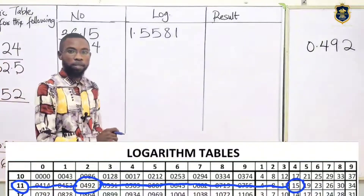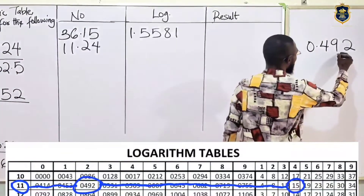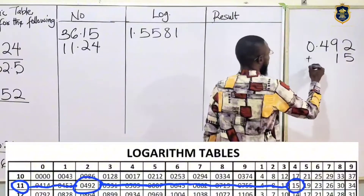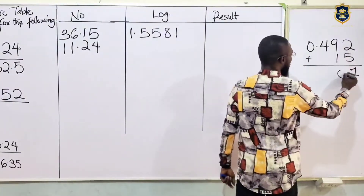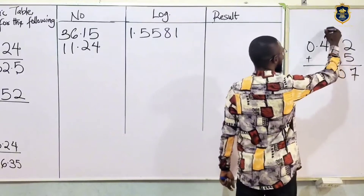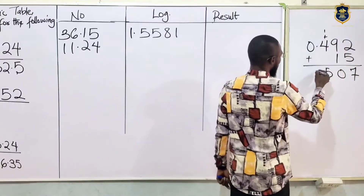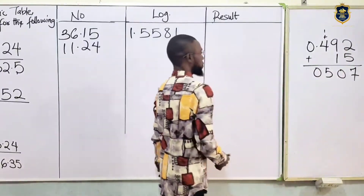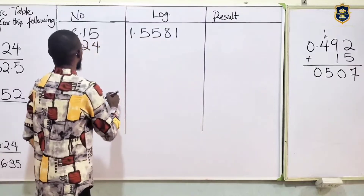Log 11 under 2 is 0492. The difference of 4 should be what? We discover the difference of 4 is 15. So we add: 2 plus 5 is 7, 10 carry 1, 1 plus 4 is 5, and this is 0. So 0507 is the mantissa.